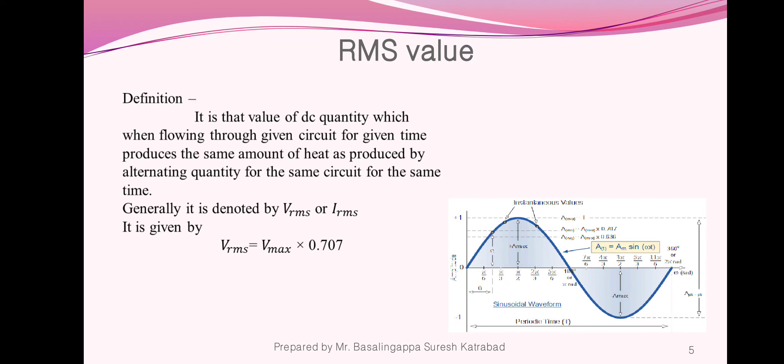Therefore, RMS value is that value of DC quantity which when flowing through a given circuit for a given time produces the same amount of heat as produced by the alternating quantity for the same circuit for the same time. Generally it is denoted by V_RMS or I_RMS. It is given by V_RMS equal to V_MAX multiplied by 0.707. In the graph, we are showing the RMS value.